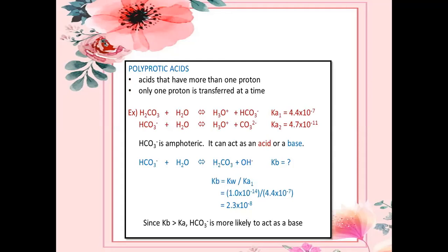Polyprotic acids are acids that have more than one proton, but only one proton is transferred at a time. This is why we refer to the first ionization constant and the second ionization constant — each time a hydrogen is removed, it has its own ionization constant value.